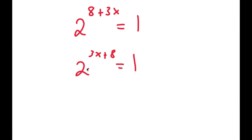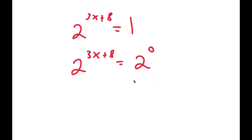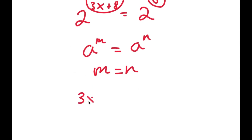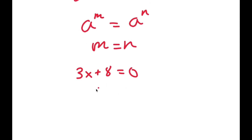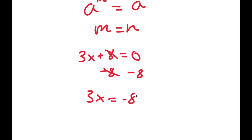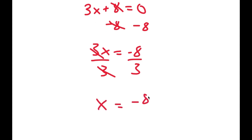Now, 2 to the power of what number equals 1? That's 2 to the power of 0. So I can write this as 2 to the power of 3x plus 8 is equal to 2 to the power of 0. If a^m equals a^n, then m equals n, so 3x plus 8 equals 0. Subtracting 8 from both sides gives 3x equals negative 8, and dividing both sides by 3 gives x equals negative 8 over 3.